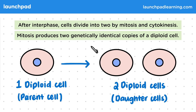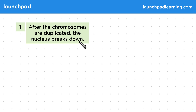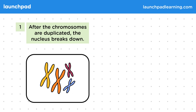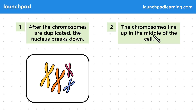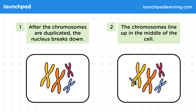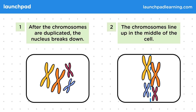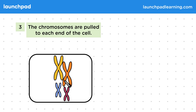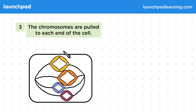So how does mitosis occur to produce two diploid cells from one diploid cell? After the chromosomes are duplicated, the nucleus breaks down. This diagram shows the cell after chromosome duplication, with the circle surrounding them being the nucleus, which now breaks down. Next, the chromosomes line up in the middle of the cell. This blue dotted line shows the middle of the cell — the cell equator. In real life this line is invisible, but it shows where the chromosomes are going to end up. Next, the chromosomes are pulled to each end of the cell. Once they are lined up along the centre, the chromosomes get pulled apart. Once this happens, we refer to them as chromatids, because they're no longer joined at the centromere.